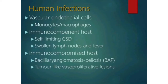Regarding human infection: vascular endothelial cells are infected, with monocytes and macrophages participating. In the immunocompetent host, self-limiting CSD is found with swollen lymph nodes and fever. In immunocompromised hosts, bacillary angiomatosis-peliosis (BAP) can be found, as well as tumor-like vasoproliferative lesions.